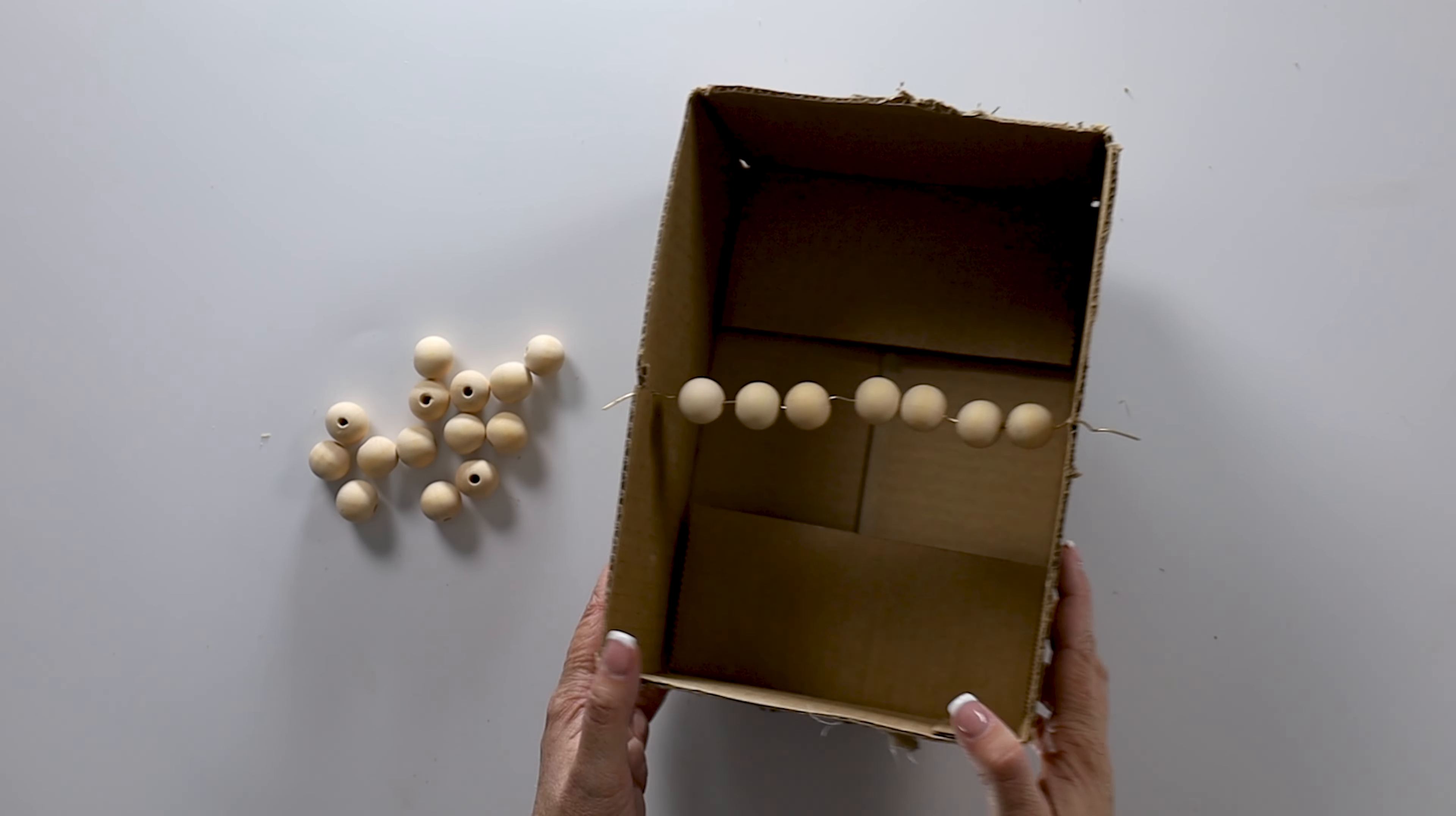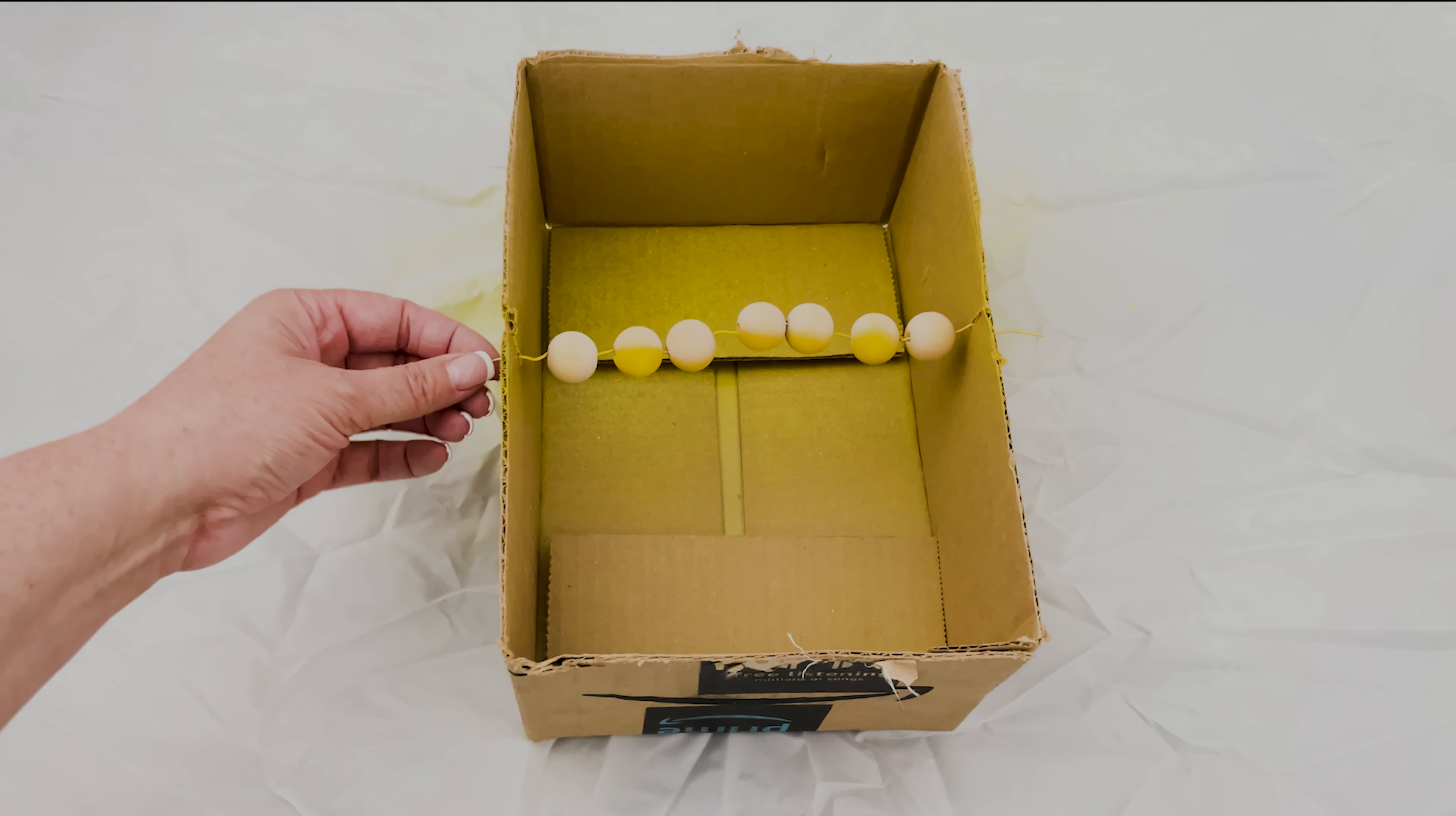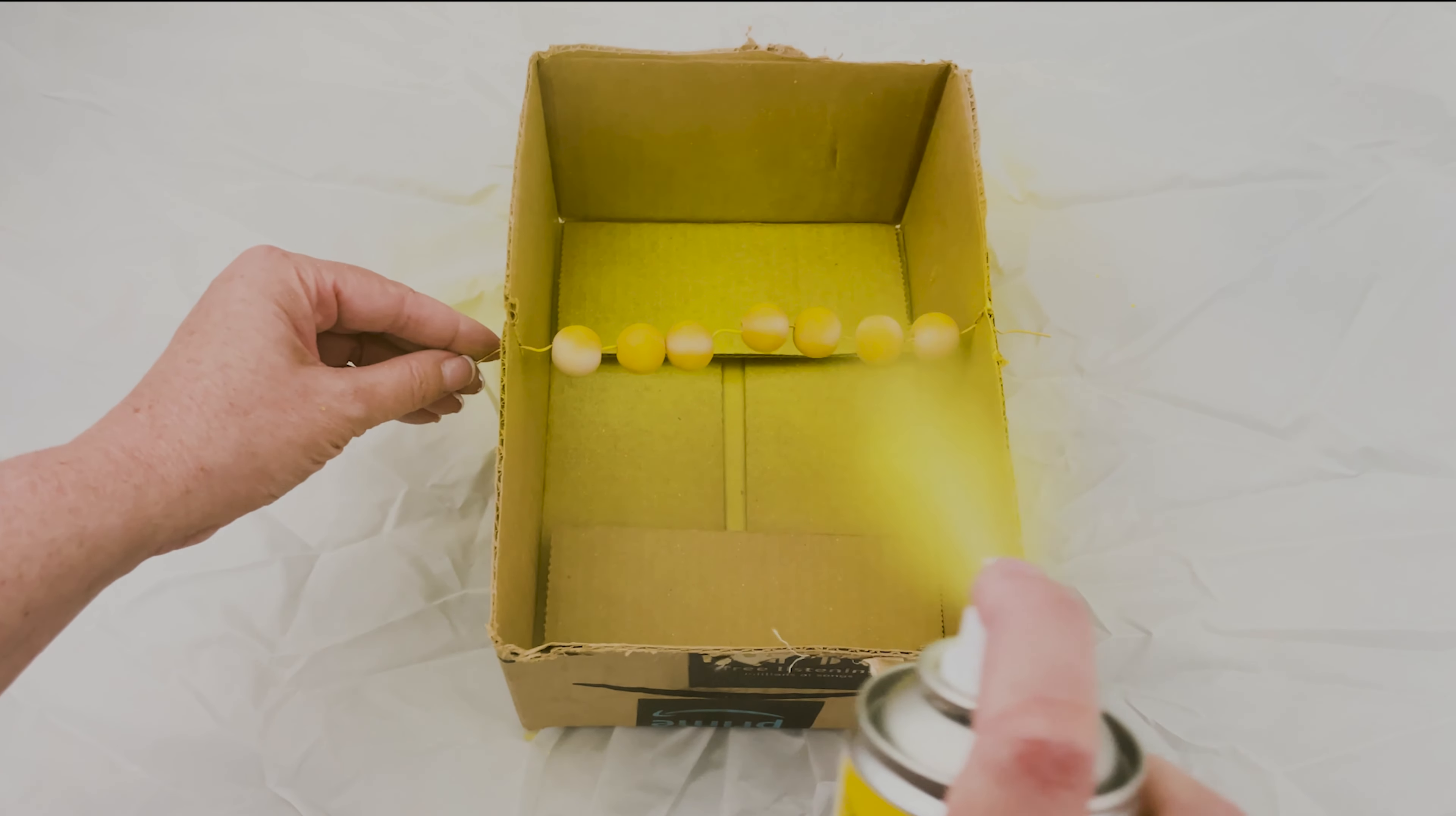I'm going to place my beads in my spray paint shelter, and let's start with our yellow spray paint. We're going to apply one light coat, and then turn the beads and spray the back side. And then we're going to let this dry for about 10 minutes.